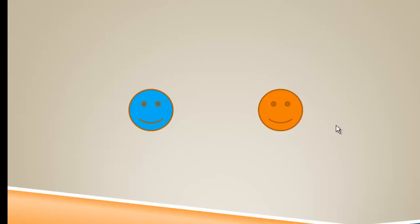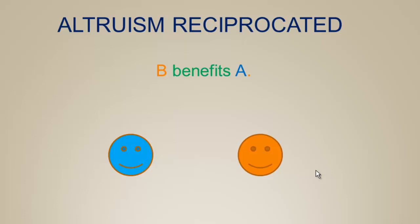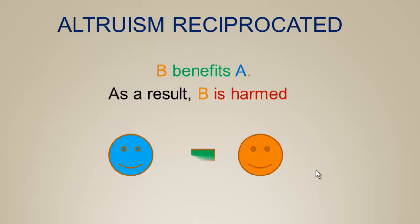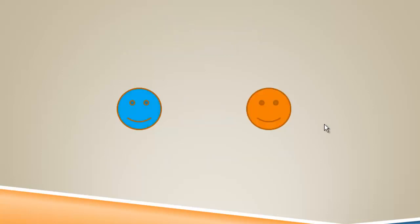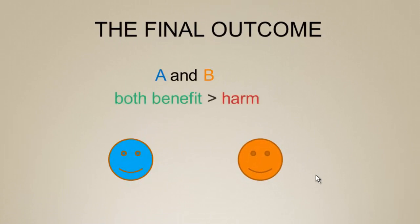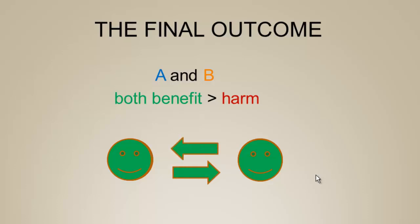In the next encounter, altruism is reciprocated: now orange benefits blue, B benefits A, and as a result B is harmed. We run the green arrow in the other direction — blue is now benefited and as a result orange is harmed. Again, the key here is that the benefit is much greater than the harm, and so if we sum this together the final outcome will be that A and B both benefit more than they're harmed — they both come out winners. In each direction, the benefit of the altruistic act is greater than the reproductive harm of engaging in that act.